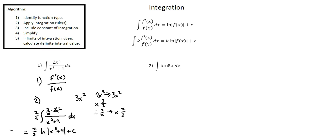Including the constant of integration plus c, this completes step 3. Step 4: there is no simplification. Step 5: there are no limits of integration. So we've completed our analysis for problem 1. The integral of the given expression with respect to x is 2 thirds times the natural log of the absolute value of x to the power of 3 plus 4, plus c.